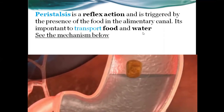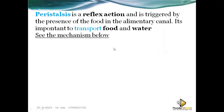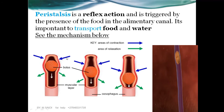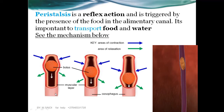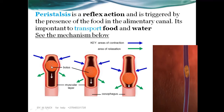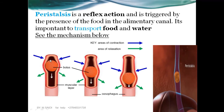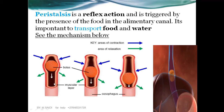Peristalsis is very important for transporting food and water in the body. You can find it in the oesophagus and even in the stomach, so that food moves in one direction. Even if you are upside down, the food will still move from the mouth to the stomach.